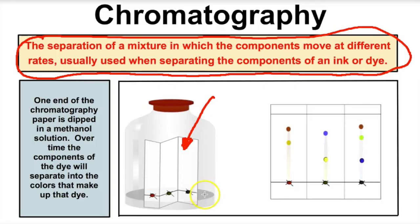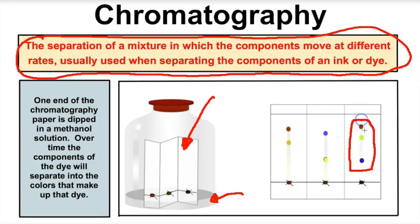Over time, what's going to end up happening is that black ink is going to separate into the different colors that make it up — the different inks or dyes used to make up black ink. For example, black ink will separate into blue, green, and red. This green ink is going to separate into blue and yellow pigment. So chromatography is the separation of a mixture in which the components move at different rates, usually when separating the components of an ink or dye.